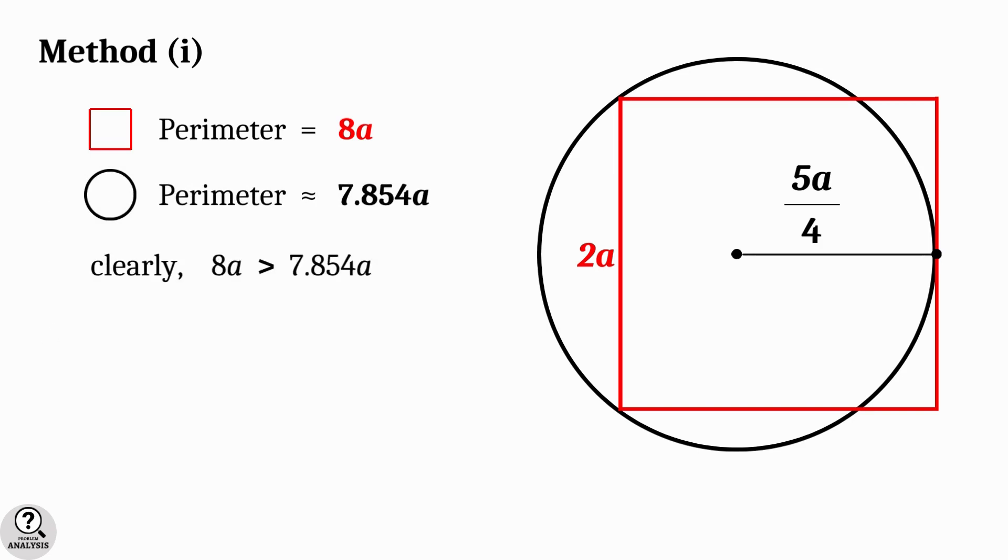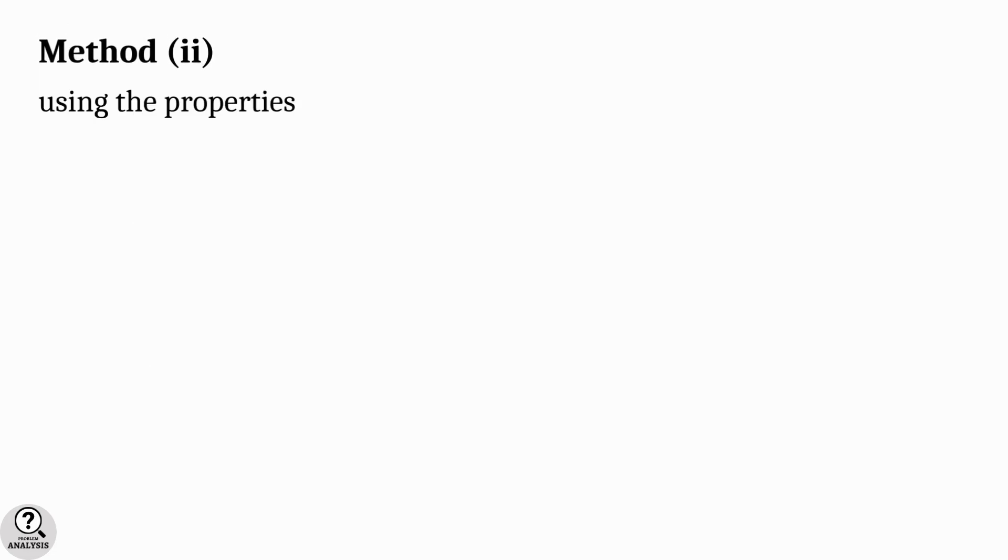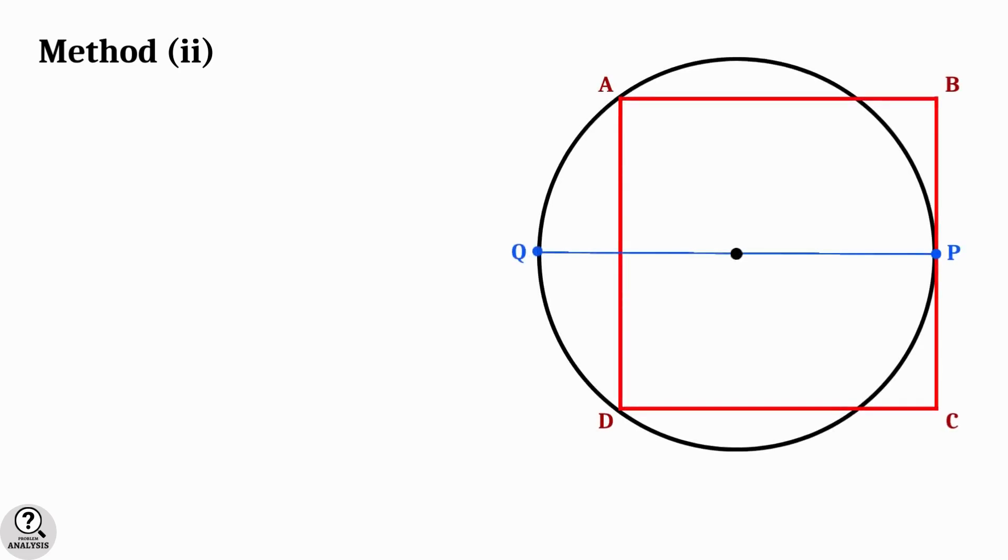Now see the difference. Clearly, 8 times a is greater than 7.854 times a. Therefore, the square has the larger perimeter. Now let's move on to the second method using the properties of similar triangles.